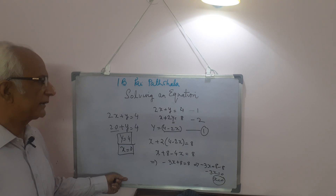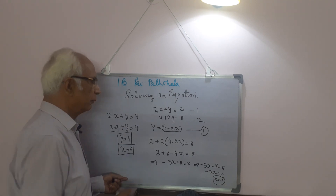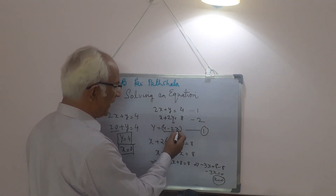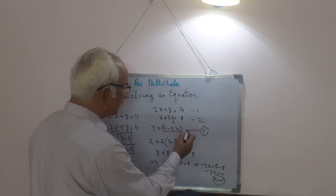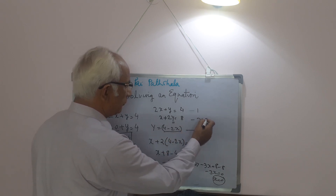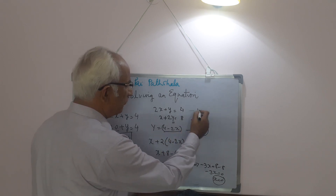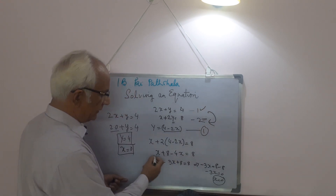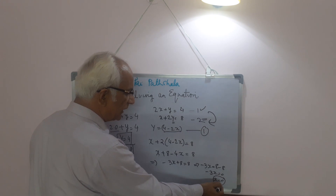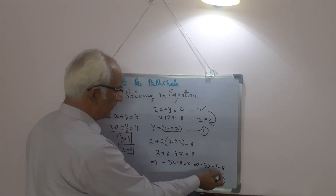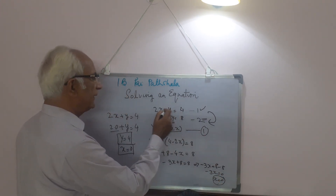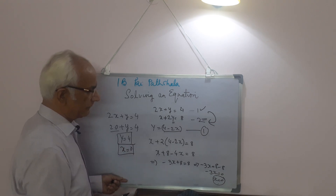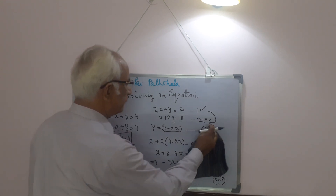So this is the first method — we found the value of one variable in terms of the second, used that value to solve the second equation, found x, and then used that value to find y. There is one more way of doing it.